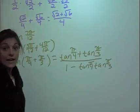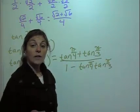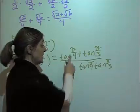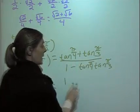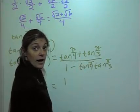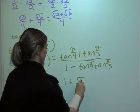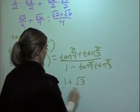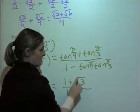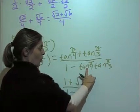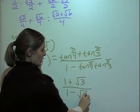That's how we set up the identity. Now we evaluate. Tangent of π/4 is 1, and tangent of π/3 is √3. So then we have 1 minus 1 times √3, which is going to be 1 minus √3 in the denominator. This is not our final answer.